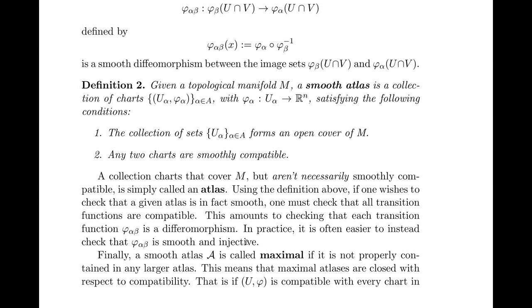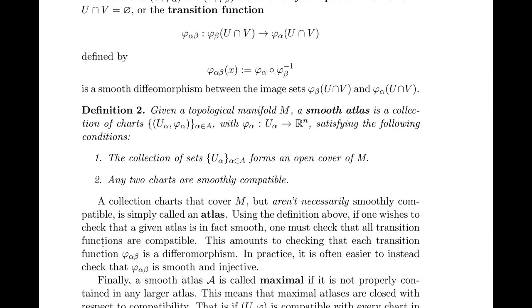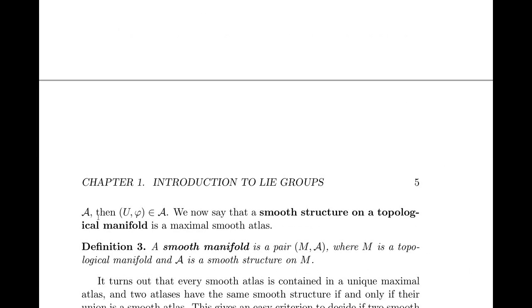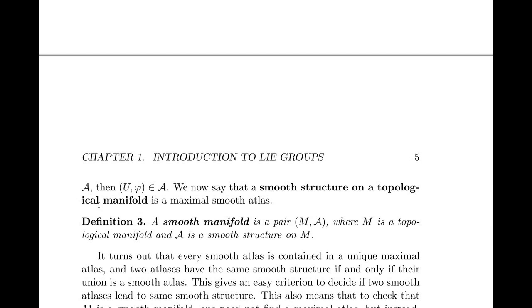Finally, we should mention another definition. A smooth atlas A is called maximal if it's not properly contained in any larger atlas. What this amounts to is saying that a maximal atlas is closed with respect to compatibility. That is, if (U, phi) is compatible with every chart in the atlas, then (U, phi) must have already been in the atlas. So now we can say that a smooth structure on a topological manifold is defined to be a maximal smooth atlas.